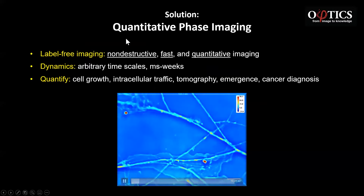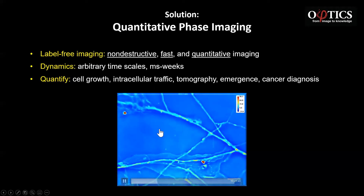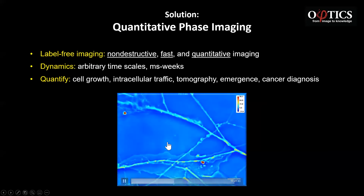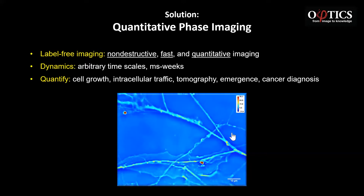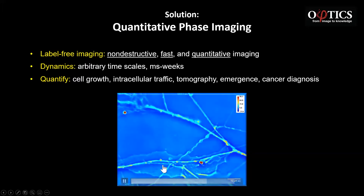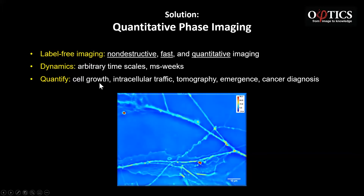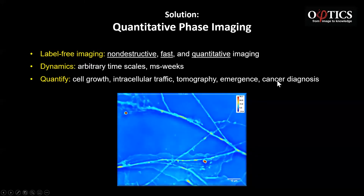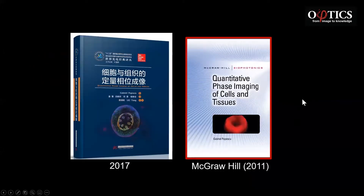The solution with quantitative phase imaging is to provide the label-free intrinsic contrast of the structure. You're looking here at the portion of a neural network where, because we don't use any fluorophores, this is first of all non-destructive, so you can image over many days. There is no photobleaching because what you're looking at here is the dry mass density of the cellular structure. Where you see more red, the cells are more dense — related to the refractive index of the cell. With quantitative information we can do cell growth, study intracellular traffic, tomography, even cancer diagnosis.